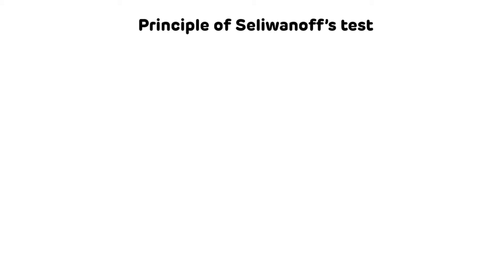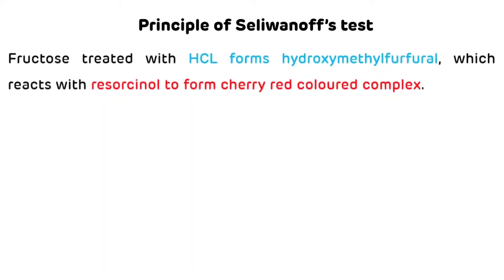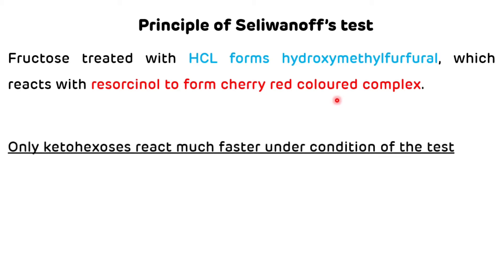Principle of Selivinov's test: Fructose treated with hydrochloric acid forms hydroxymethyl furfural, which reacts with resorcinol to form a cherry red color complex. Only keto hexoses react much faster under the conditions of the test.